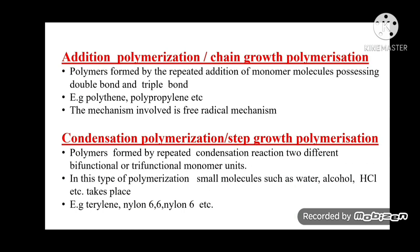Addition polymerization or chain growth polymerization: polymers are formed by the repeated addition of monomer molecules possessing double or triple bonds; examples are polythene and polypropylene. The mechanism involves free radical, anionic, or cationic mechanisms. Condensation polymerization or step growth polymerization: polymers are formed by repeated condensation reactions of two different bifunctional or trifunctional monomer units, with elimination of small molecules such as water, alcohol, or HCl. Examples include terylene, nylon-66, and nylon-6.